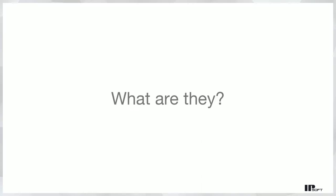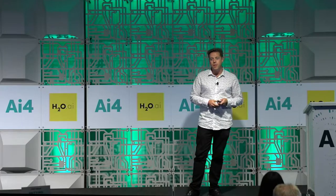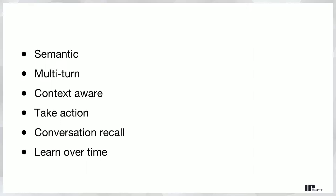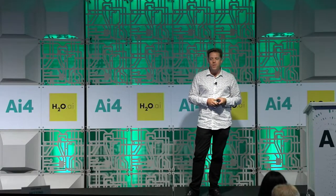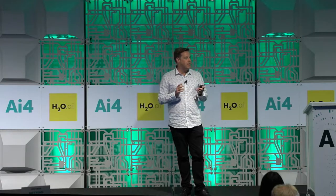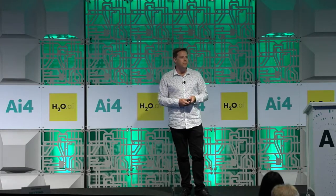So what are conversational agents? There are a couple of key characteristics of good conversational agents today. They're semantic — they have true understanding of the language a person is using. They're multi-turn, meaning both the agent and the human can be asking each other questions and giving answers. They're context-aware, able to pull from all the information you have about someone. They take action — it's not just FAQ or Q&A, it's actually doing something for the person. There's conversational recall, meaning it can remember between different conversations what happened previously. And it should learn over time — not necessarily on its own, but continuously adjusting against drift.